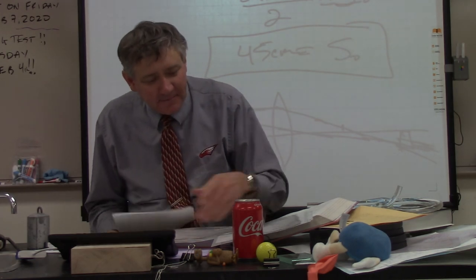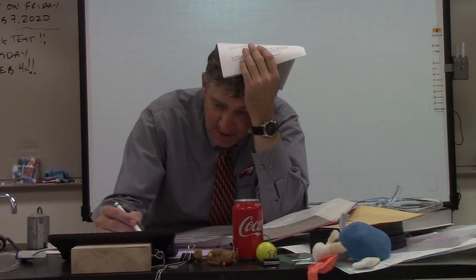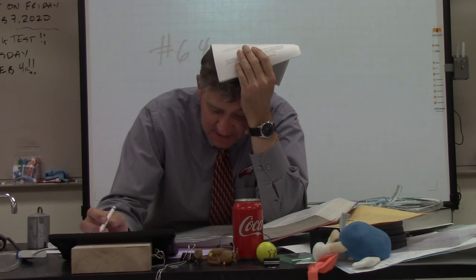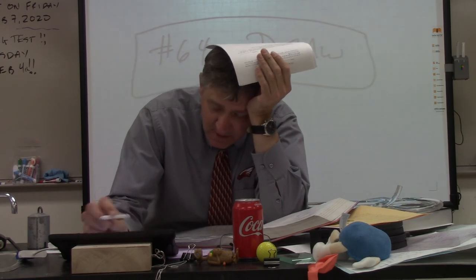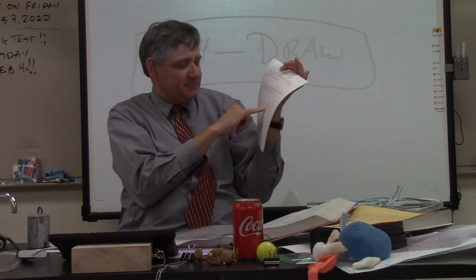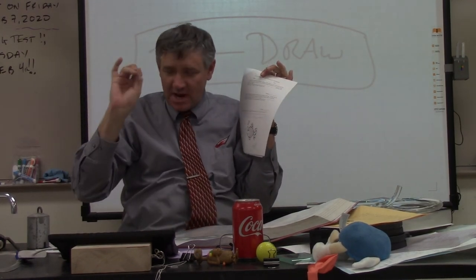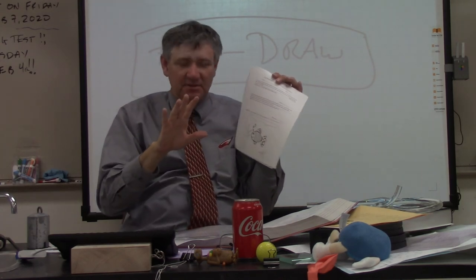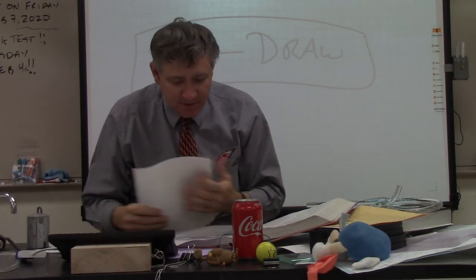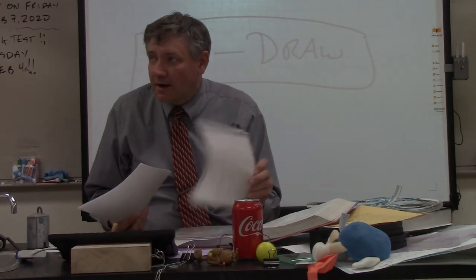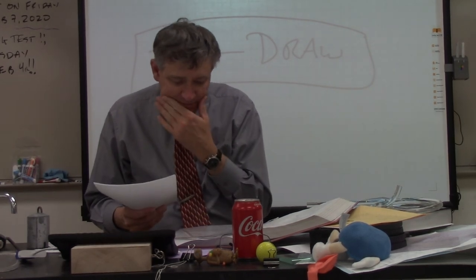On the assignment, when you get to number 64, this is the only one where you actually have to draw out the ray diagram. Problem 64 is worth a lot of points and you have to draw it out. Yes, you can use the thin lens equation, but fundamentally you want to use the diagrams on number 64. You can do it on your paper, but it's going to be easier with the printed diagram.